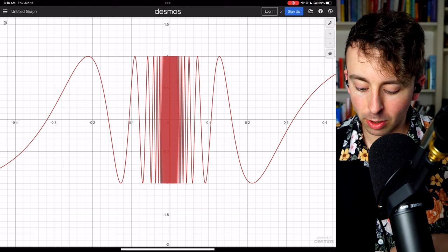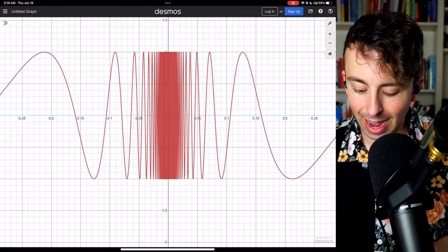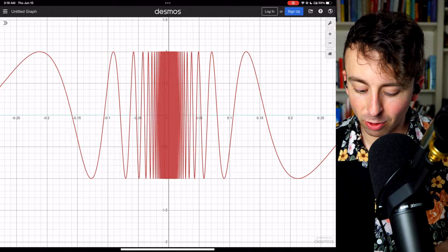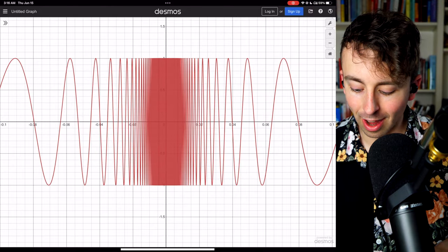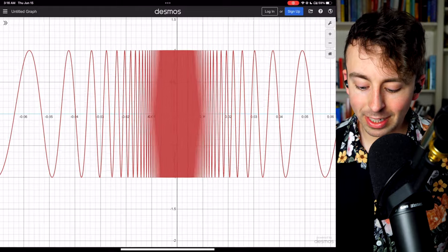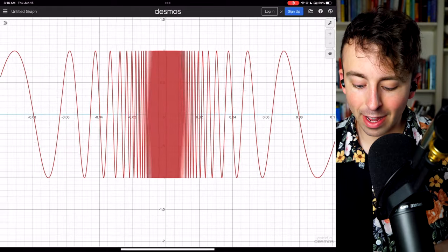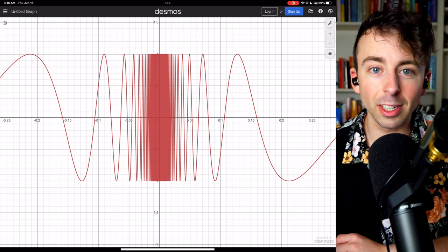so we're getting closer and closer to 0, just zooming in along the x-axis, you can see that it is just oscillating more and more quickly. Looks kind of ridiculous. It is clearly not approaching any sort of finite value as we get closer and closer to 0.